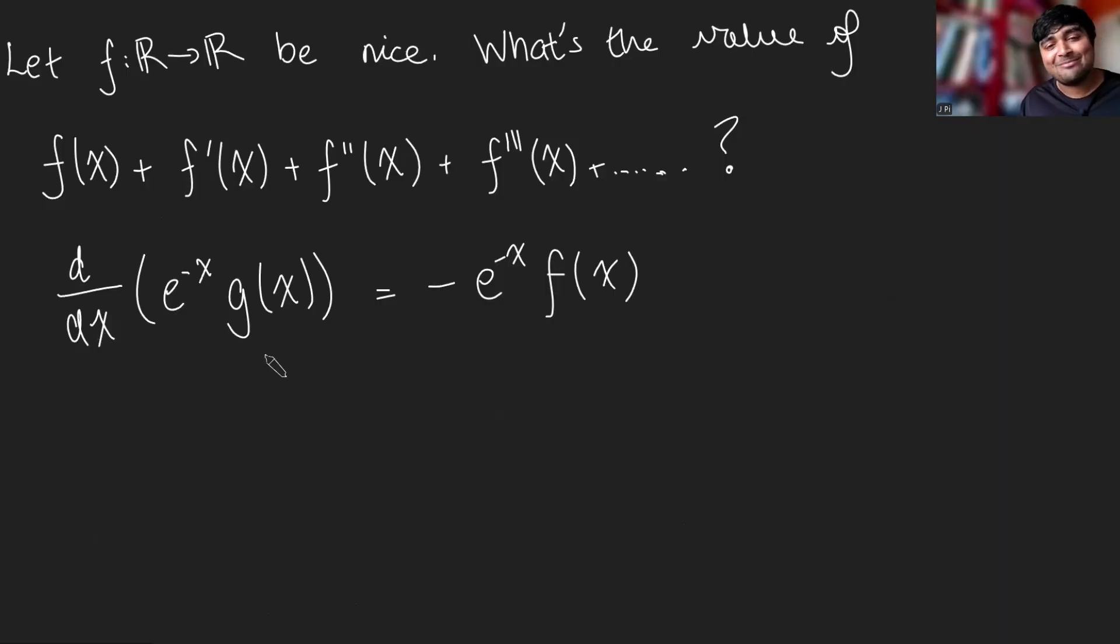So the derivative of e^(-x)g(x) equals -e^(-x)f(x). So to make g(x) the subject, first things first, we've got to get rid of the d/dx. In order to do that, we're just going to integrate both sides. So we get e^(-x)g(x) = -∫e^(-x)f(x)dx.